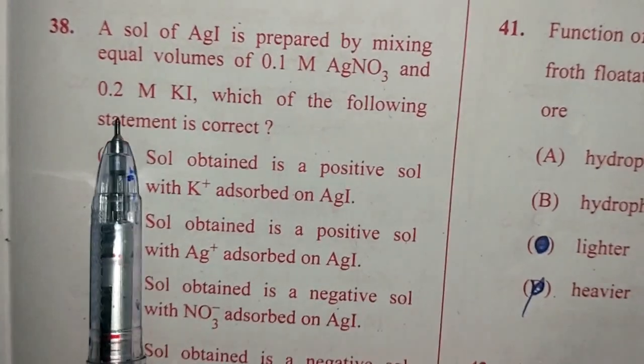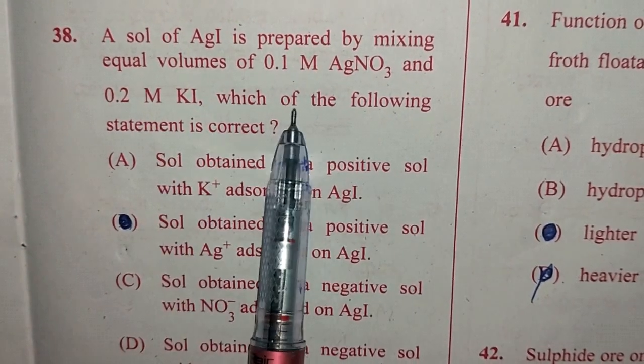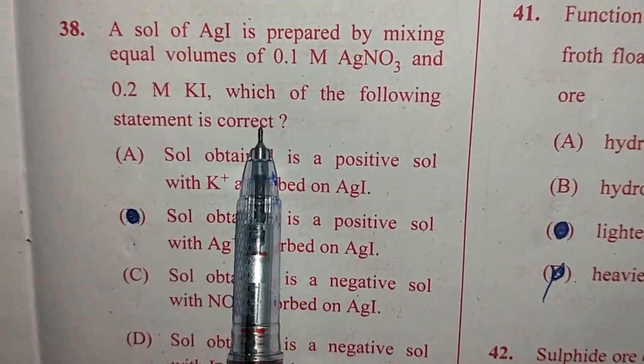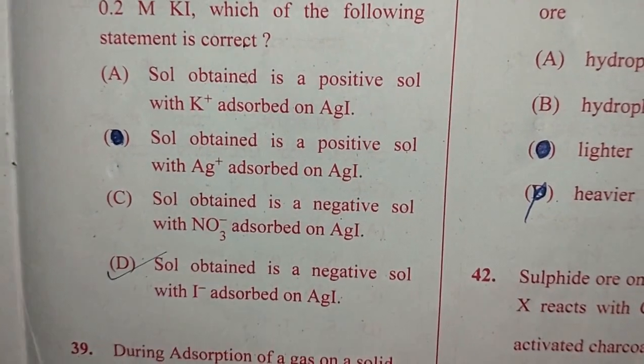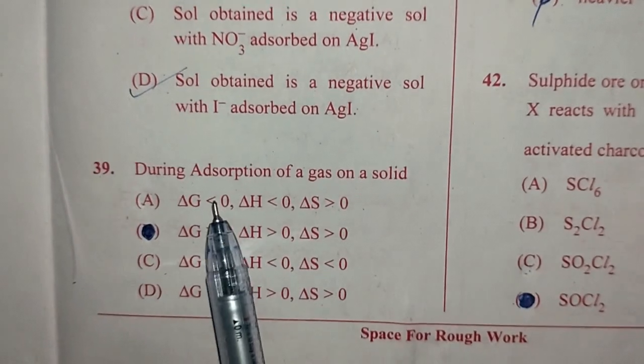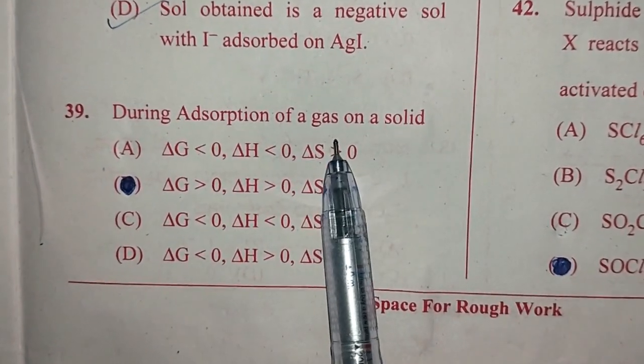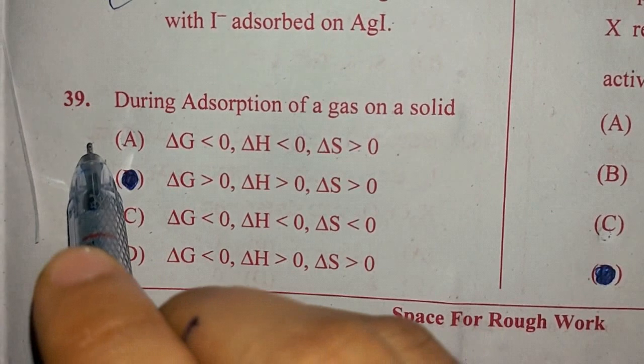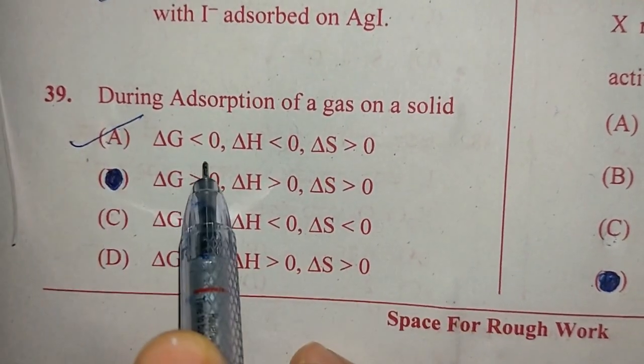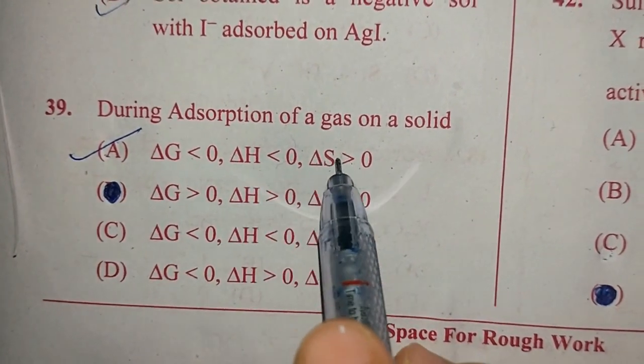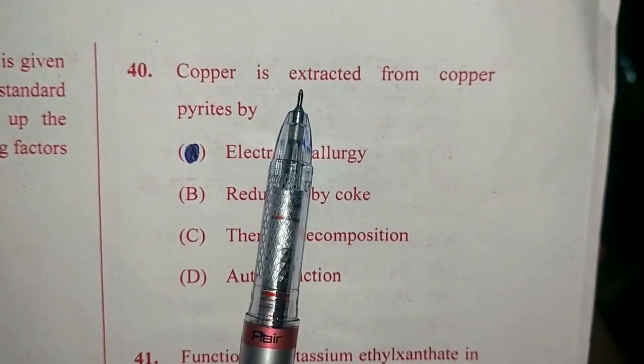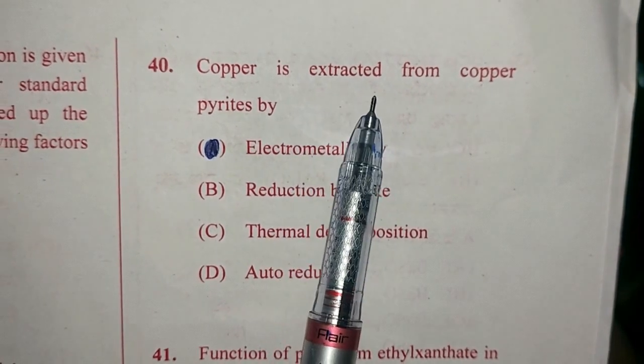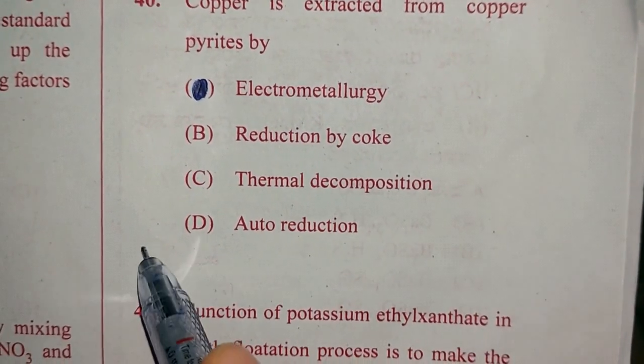Question number 38. A sol of silver iodide is prepared by mixing equal volumes, 0.1 molar AgNO3, 0.2 molar KI, which of the following is correct. So the answer for this is option D. Sol obtained is a negative sol with iodide adsorbed on AgI. Question 39. During adsorption of a gas on a solid, delta G is smaller than 0, delta H is smaller than 0 and delta S is greater than 0, option A. Question number 40. Copper is extracted from copper pyrites. Answer is auto-reduction, option D.